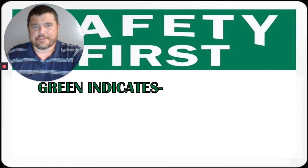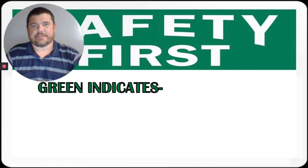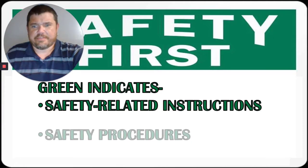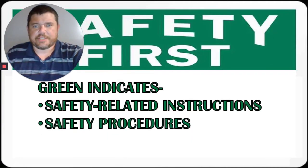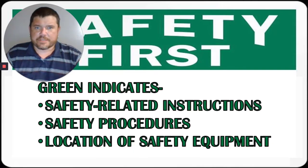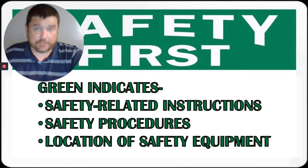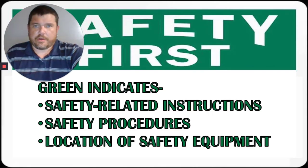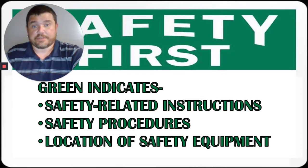Green signs are safety reminder signs. These give us instructions and remind us what we need to be doing — safety-related instructions, safety procedures, and locations of safety equipment. This one is important because it tells you where eyewash stations are if you get something in your eye from flying debris, or where a safety shower is in case of a chemical spill. It also marks the location of first aid kits.